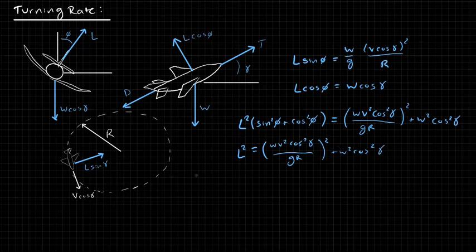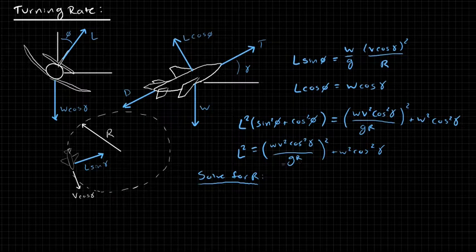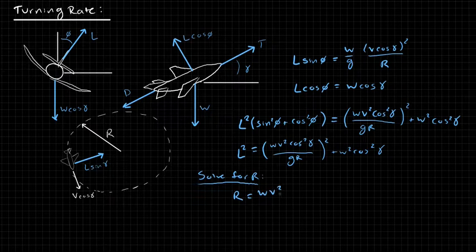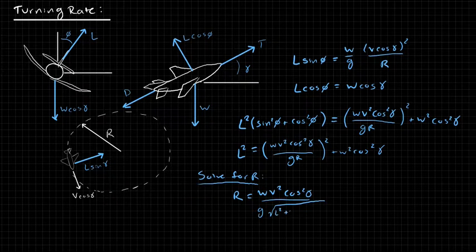And now we can solve for R. I'm not going to go through all the details of this. I encourage you to do it on your own, but it's just algebra. Solving for R gives us R equals W V squared cos squared gamma divided by G times square root of L squared plus W squared cos squared gamma.